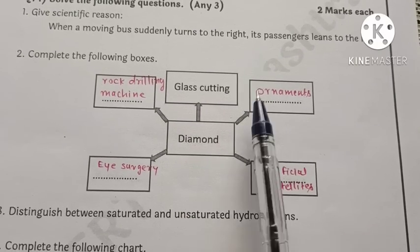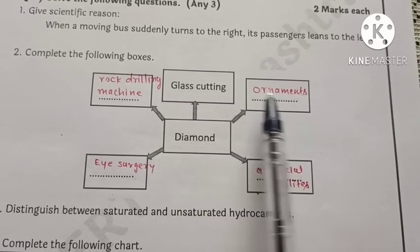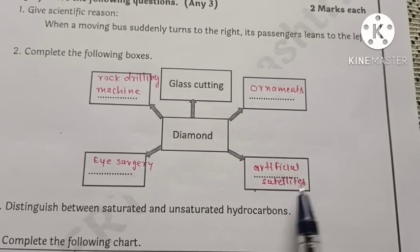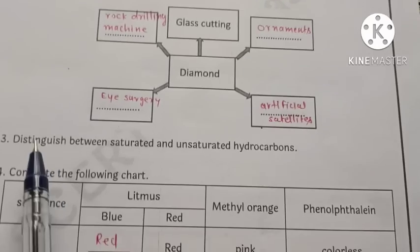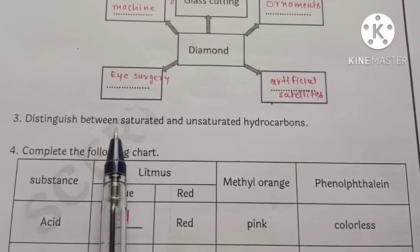Next, second sub-question: complete the following boxes. Diamond cutting, glass. Uses of diamond: first use is glass cutting, second ornament, artificial satellite, eye surgery, rock drilling machine.